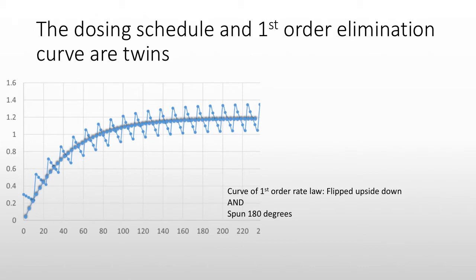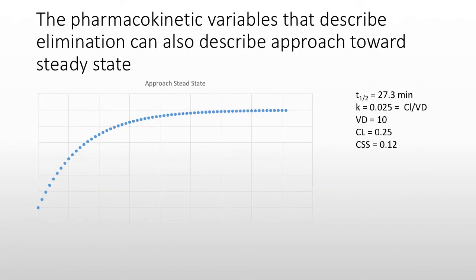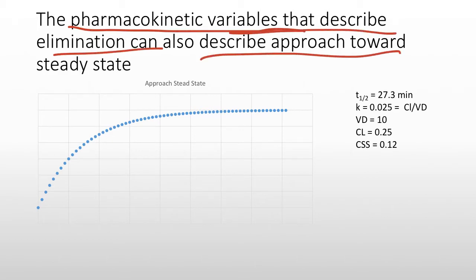How did I get this curve? I took my first order elimination, flipped it, and spun it 180 degrees. The main point is that the pharmacokinetic variables — the same variables that describe elimination — will also describe the approach towards steady state concentration. Variables like half-life, volume of distribution, clearance, and concentration steady state all describe the approach towards steady state.